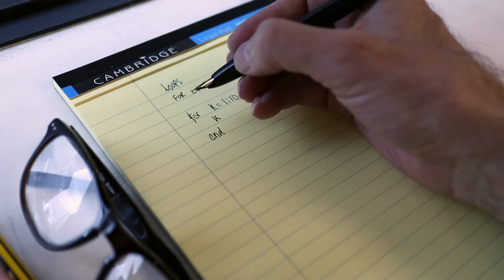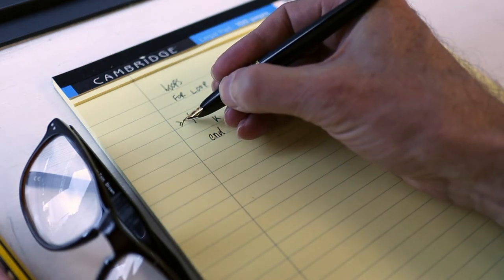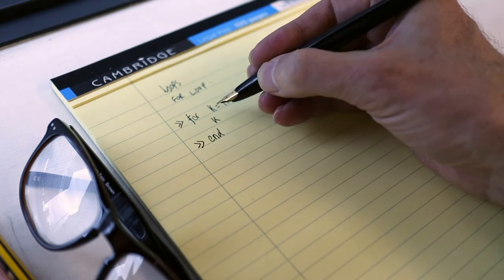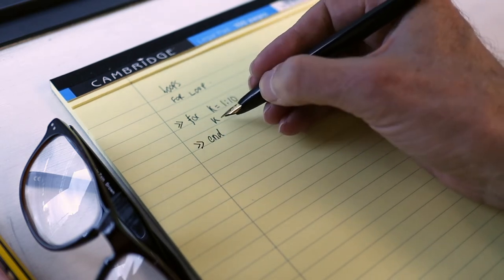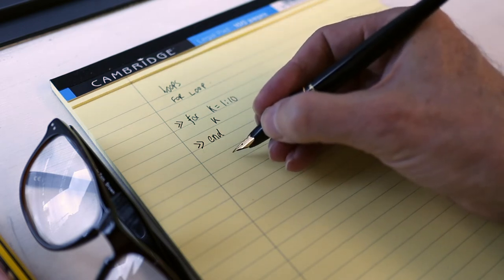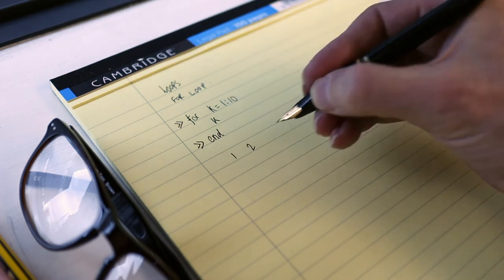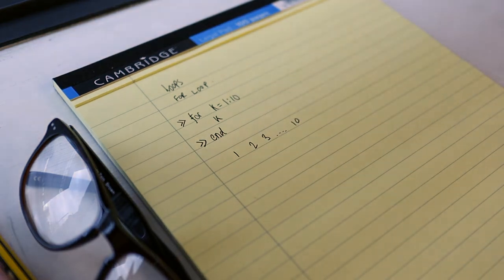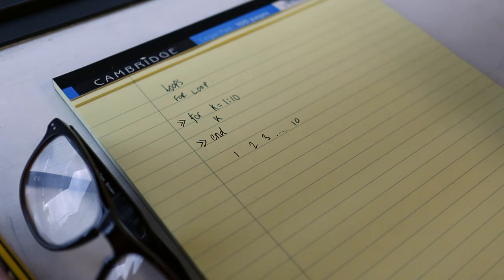And what MATLAB will do is it will perform that 10 times, and each time all we're doing is saying output k. So it'll do it vertically, but just to show you, you'll get this kind of output up to 10. That's it. Not a very exciting example, but that's how a for loop works.